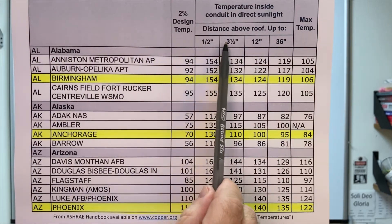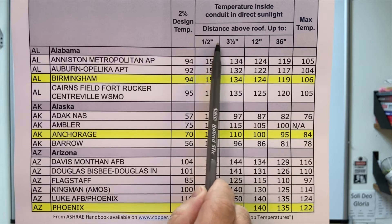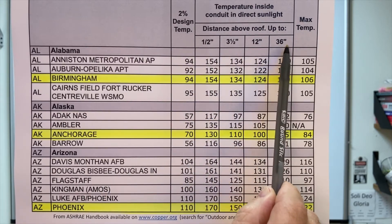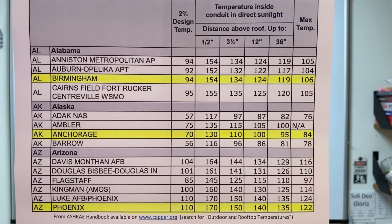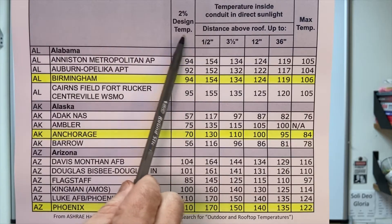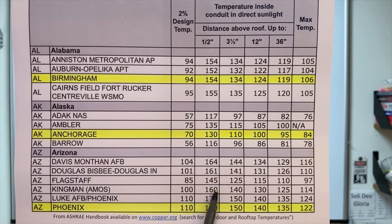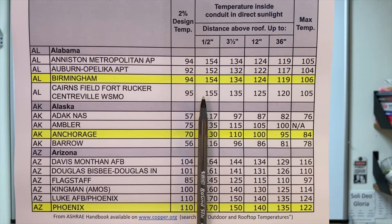These distances above the roof used to be important because ampacities would differ depending on how far above the roof surface our conduits were run. But that changed in 2017, and the code now is only concerned if we're less than 7/8 of an inch off the roof surface. If we are that close, it requires us to add 60 degrees Fahrenheit to our outdoor temperatures. And sure enough, what's the difference between those two columns? 60 degrees. So as it stands now, we're only concerned with those two columns.